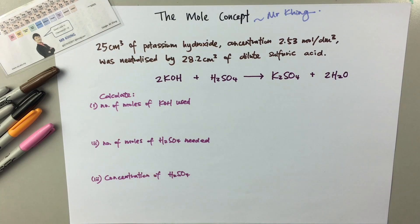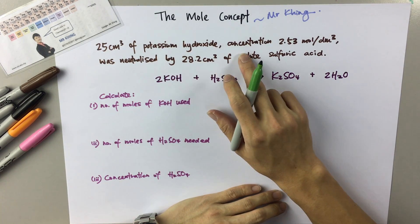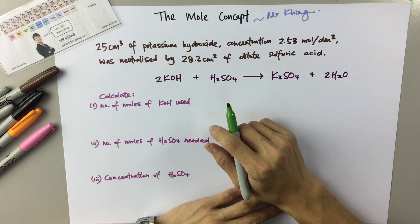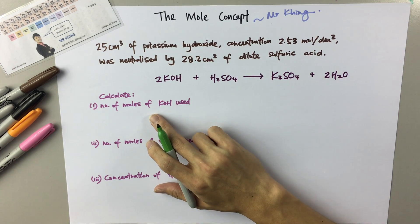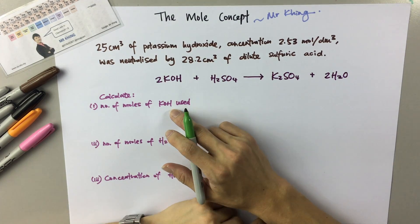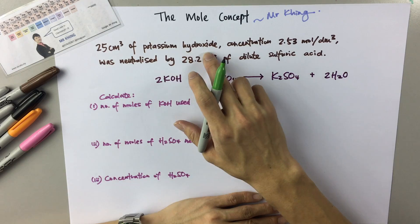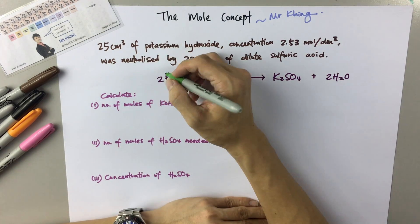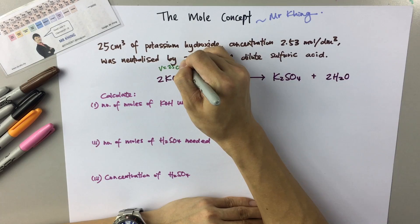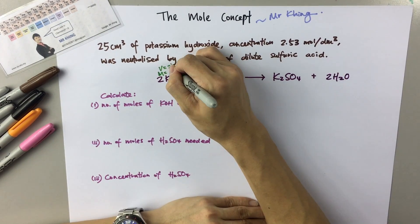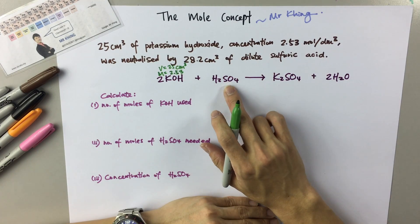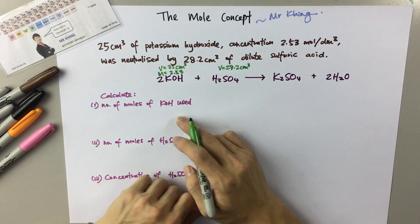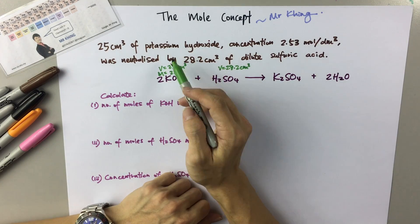Continue with next examples of past year questions. Given 25 cm³ of potassium hydroxide with a concentration of 2.53 moles per dm³, it was neutralized by 28.2 cm³ of dilute sulfuric acid. They ask you to calculate the number of moles of KOH used. Before you start, always jot down all the information available — it gives you a better idea of which formula to use. For KOH: volume is 25 cm³ with concentration 2.53. For H₂SO₄: volume is 28.2 cm³.